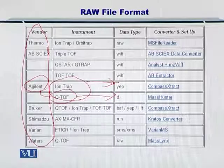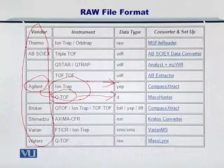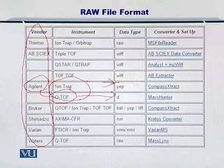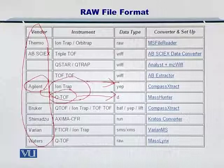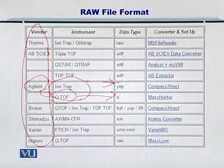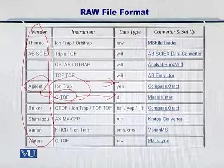Now, if there are so many raw file formats, we need some way to arrive at a standard which is usable and consumable by other software tools towards identification of proteins. For that purpose, there are several converter softwares available that convert this raw file — for instance, the .d file or the YEP file — into standard data representations.